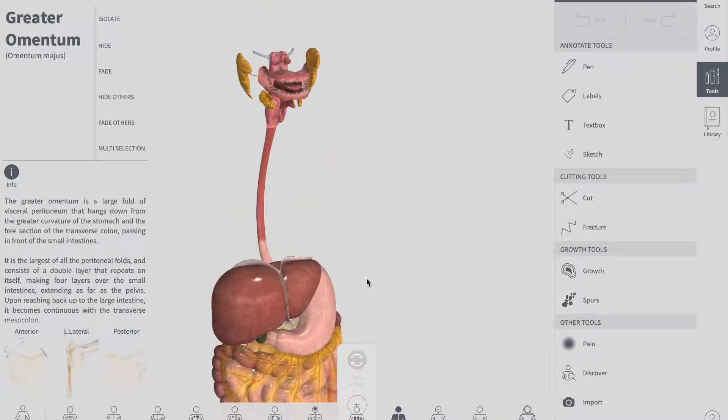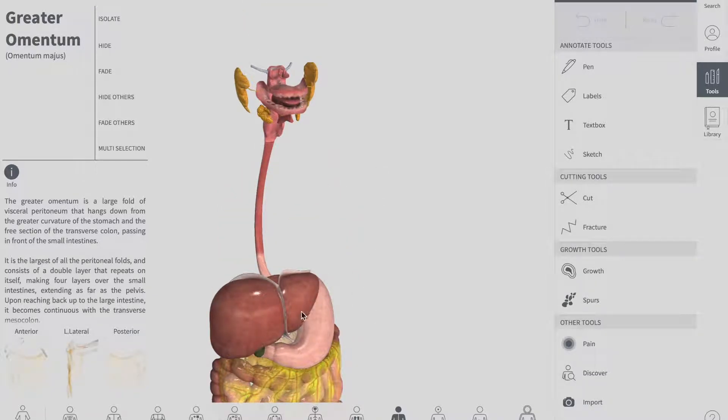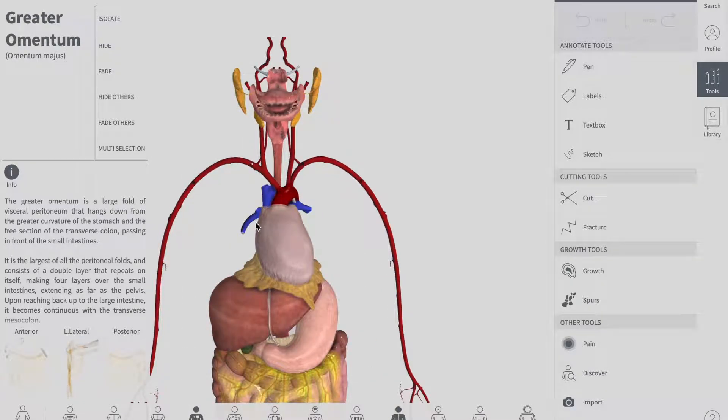The thoracic part of the esophagus receives arterial supply from branches of the thoracic aorta and the inferior thyroid artery, which is a branch of the thyrocervical trunk. Venous drainage is via the azygous veins and inferior thyroid veins.